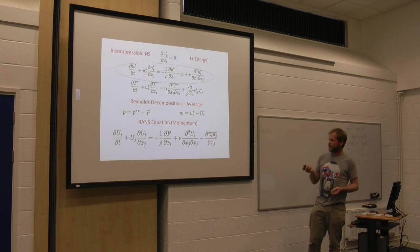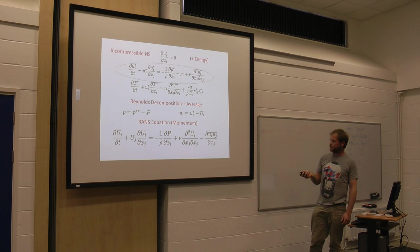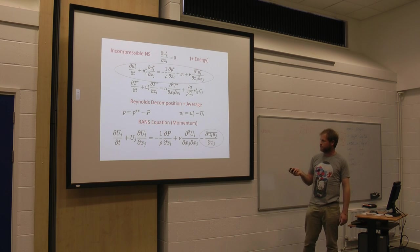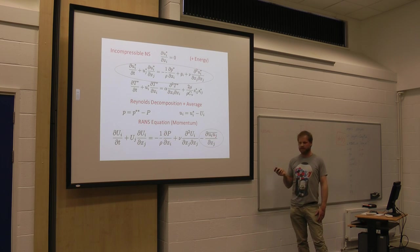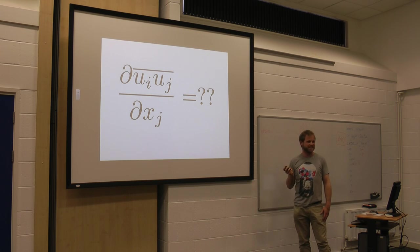So we try to find an equation for the average, and we get this equation here, and we look at it and we're like, oh yeah, this looks pretty good, and then we notice this term over here, and we're like, oh, what's this thing? So what is this thing? This is turbulence. That's turbulence.